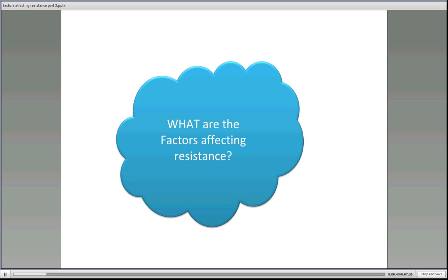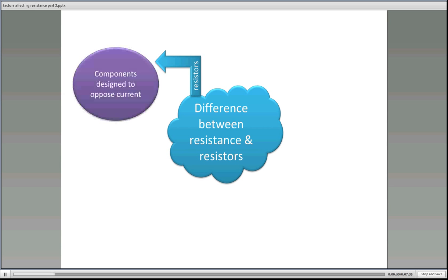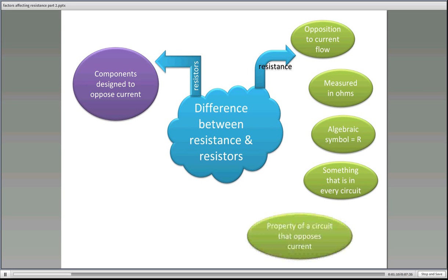So in the first part we looked at the factors affecting resistance and what were they, and we also looked at what was the difference between resistance and resistors. We saw resistors were components which were designed to oppose current, where resistance is the opposition to current flow. It's measured in ohms, the algebraic symbol which means the mathematical symbol is the letter R. It's something that is in every circuit and we define it as the property of a circuit that opposes current.